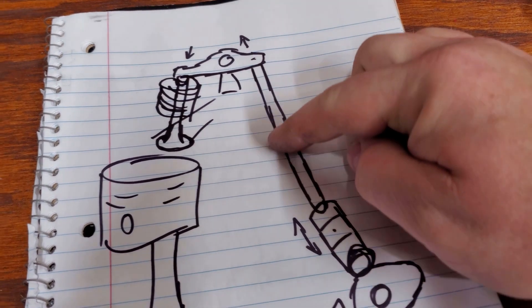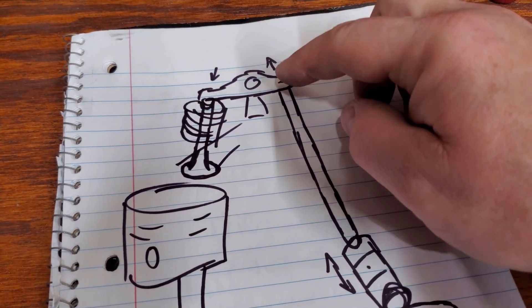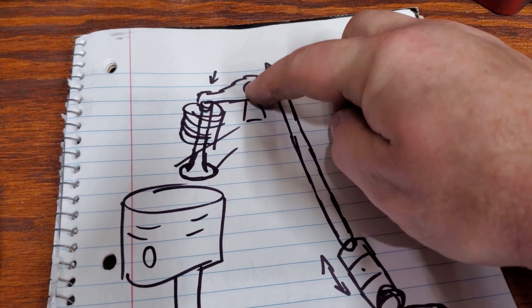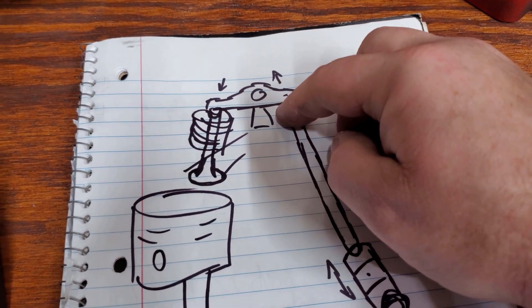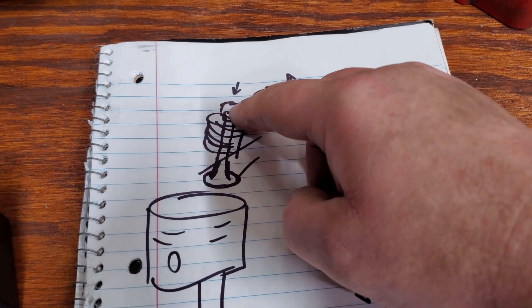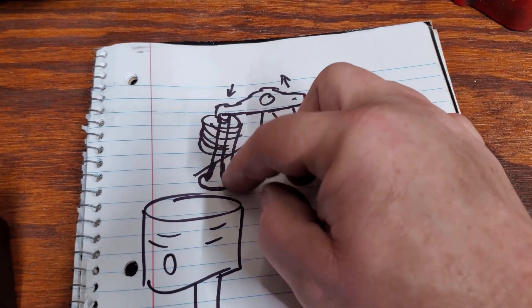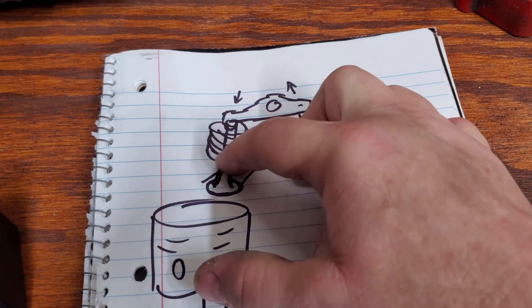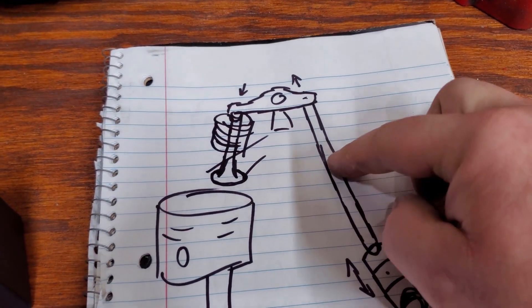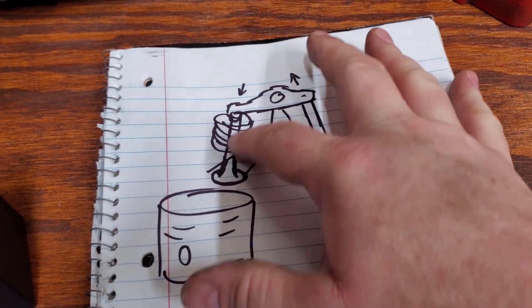That in turn pushes the push rod up. The push rod pushes one end of the rocker arm, which is attached in the middle and has a pivot point. Pushing up on that end of the rocker arm pushes down on the other end, which pushes this valve down to open it. Then the valve spring pops it back closed anytime there's no pressure on this side. That's how it's able to open and close and allow air in or out of the cylinder.